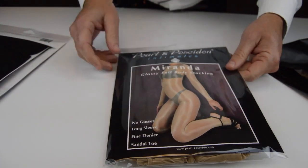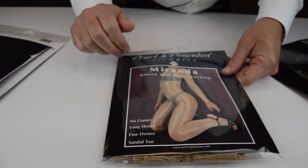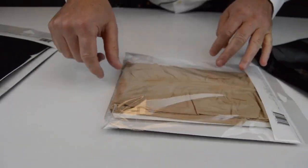And what is Miranda? 66 nylon, full glossy body stocking, no gusset, long sleeve, fine denier, sandal toe.